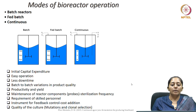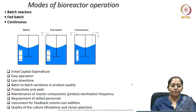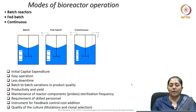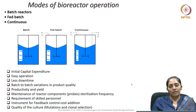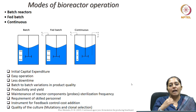In fed batch mode, feed comes inside the reactor but nothing goes outside, so the volume keeps changing with time. In the continuous mode, there is one stream continuously going inside the reactor and another stream continuously coming out — continuous inlet and outlet — and this mode is termed continuous mode of cultivation.